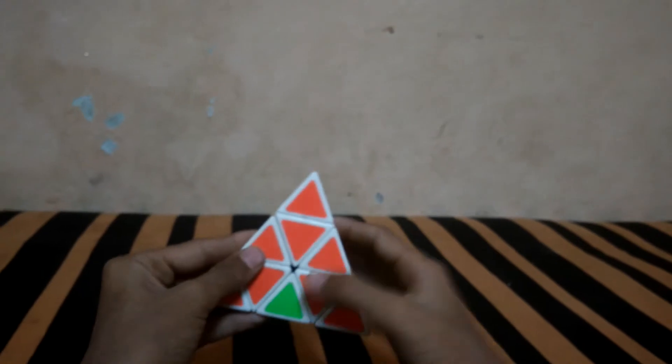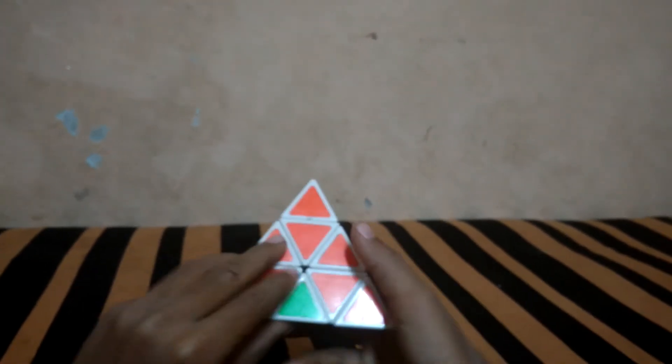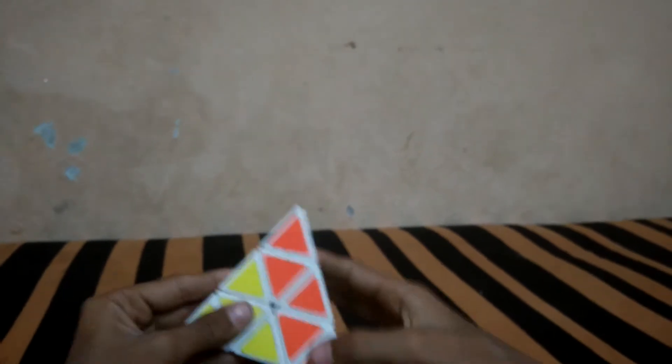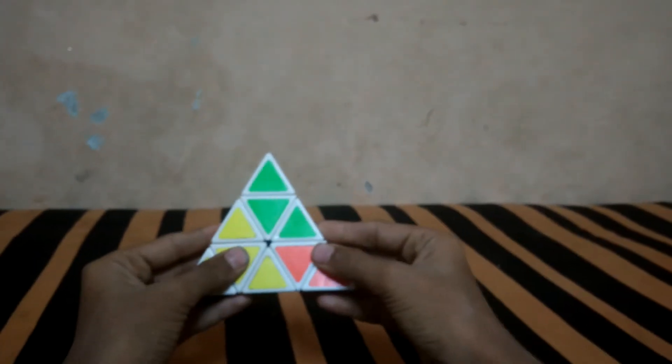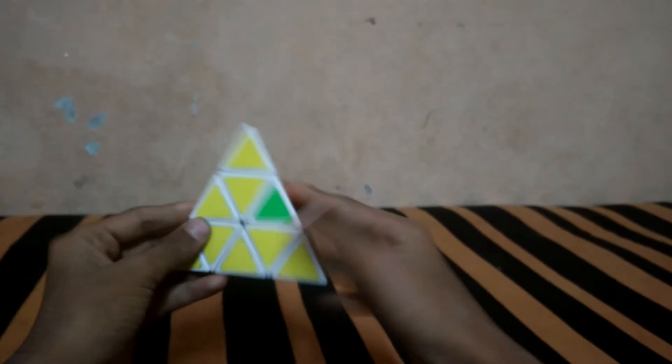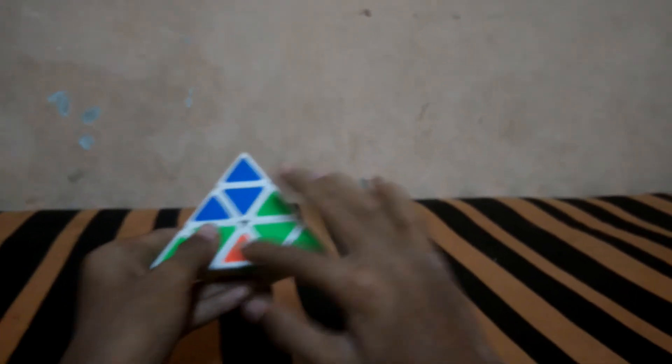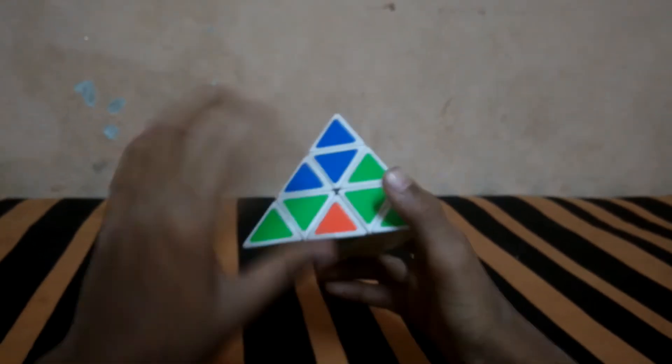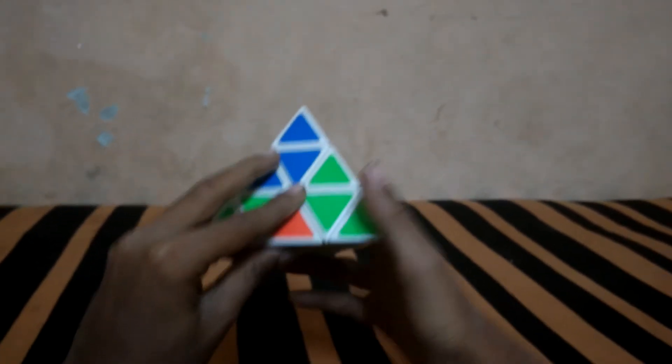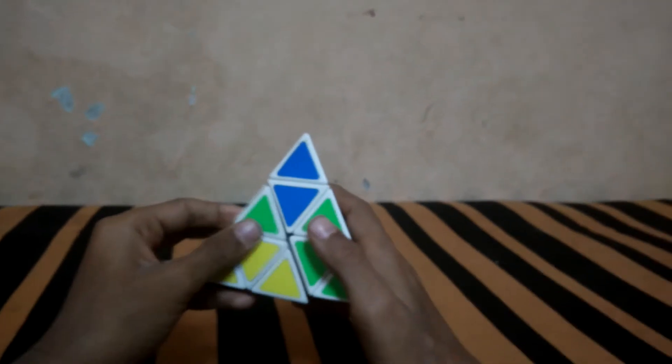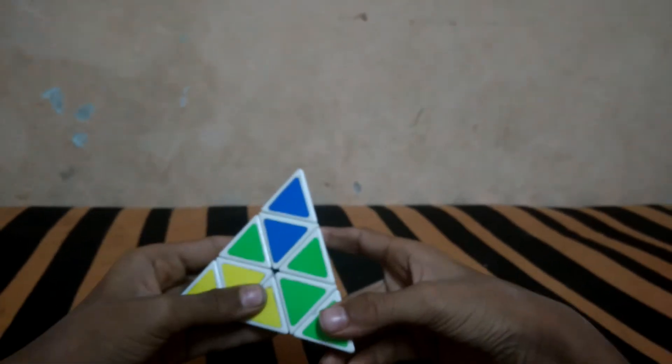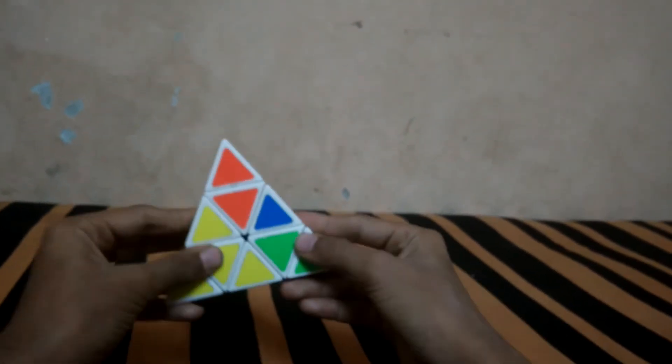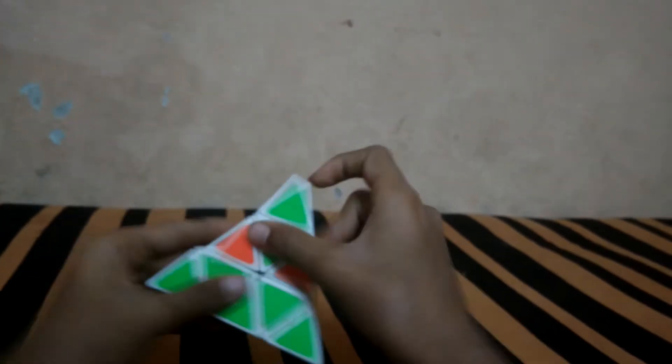When we have to take it from right to bottom, use L U L'. The last edge piece is remaining. Here it is, perfectly aligned. Same method right to bottom: L U L'.